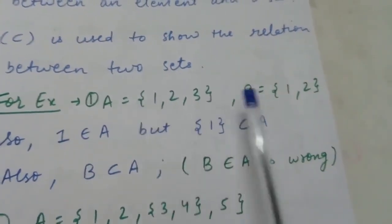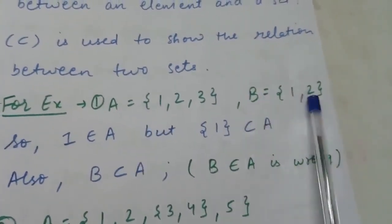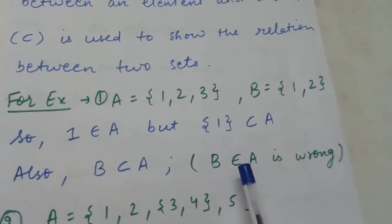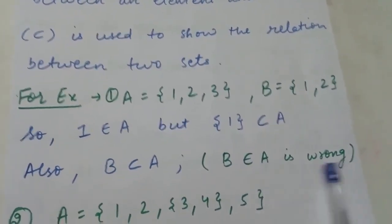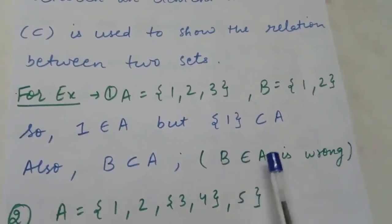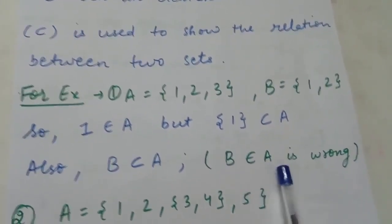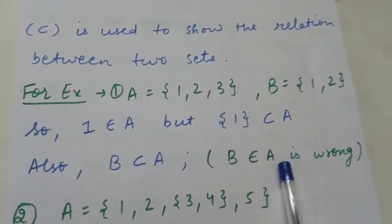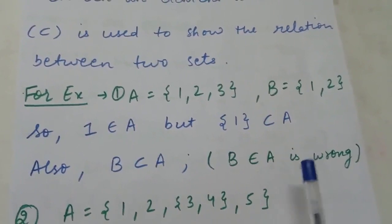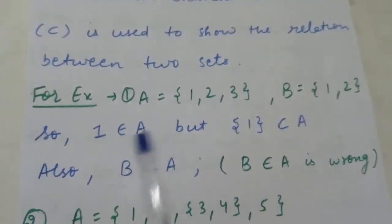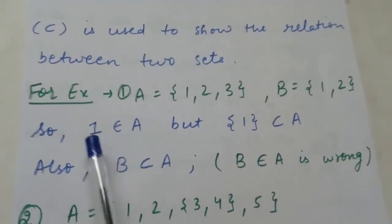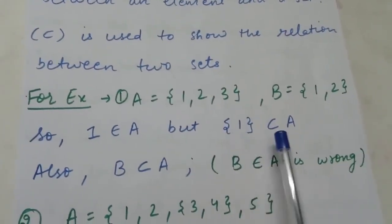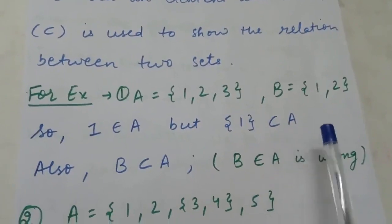Comparing the two sets, since 1 and 2 both belong to A, B is a subset of A (B ⊆ A). Saying B ∈ A is wrong because B and A are two sets; to show the relation between two sets we always use subset. An element belongs to a set; two sets are either subsets of each other or not.